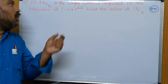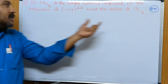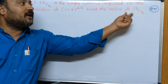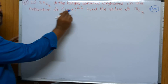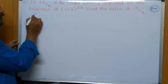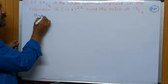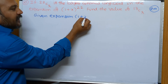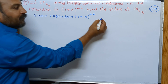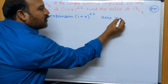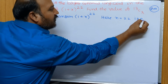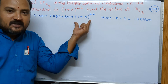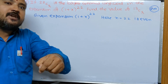If 22Cr is the largest binomial coefficient in the expansion of (1+x)^22, find the value of 13Cr. The given expansion is (1+x)^22, where n = 22 which is even. Whenever n is even, the largest binomial coefficient is nC(n/2).